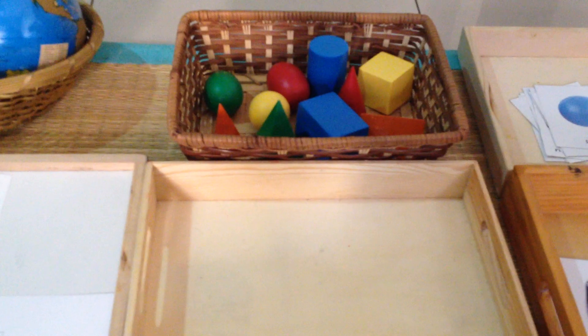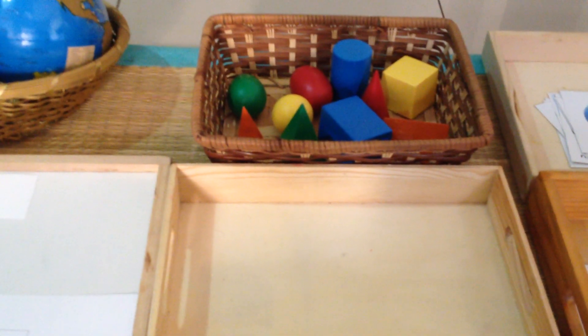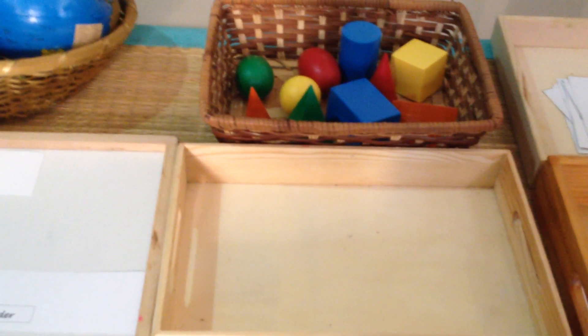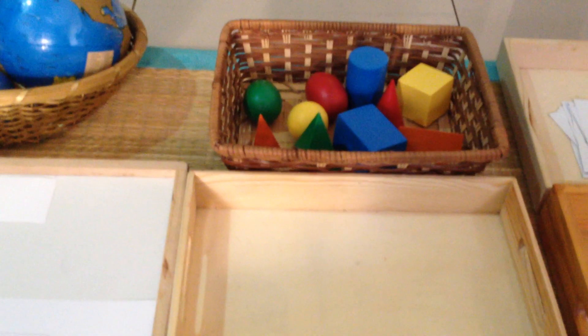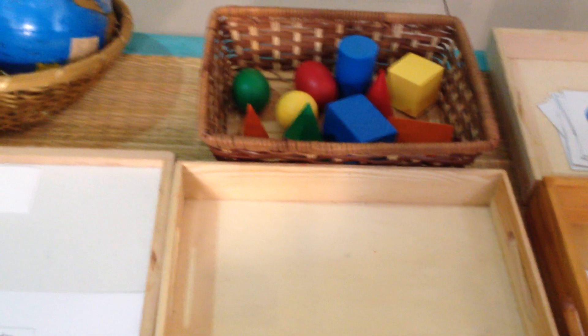I would say once your toddler is able to recognize the two-dimensional shapes, you know, geometric shapes like your squares, circles, ovals really well, that's when you can introduce one or two geometric solids at a time to your child.